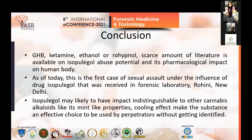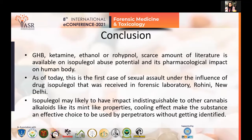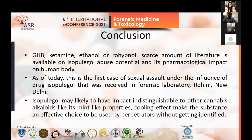In conclusion, conventionally there are many kinds of substances such as GHB, ketamine, ethanol, and flunitrazepam that exist in the market and are potentially abused. However, very scarce literature was present on isopulegol-level abuse, and this was the first time such a case was reported in which this novel substance was used for the commencement of an offence. Isopulegol may likely have effects indistinguishable from other cannabis alkaloids and has properties like a mint and cooling effect, which also make it an effective choice for perpetrators to use without getting identified.